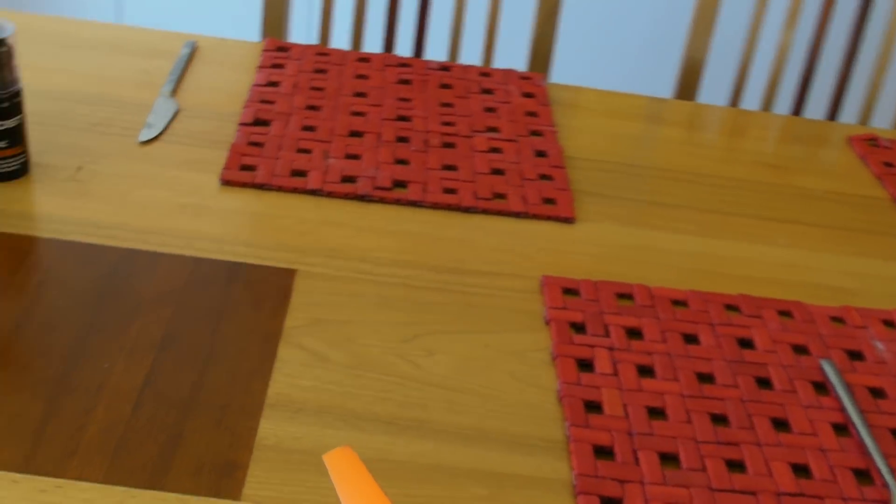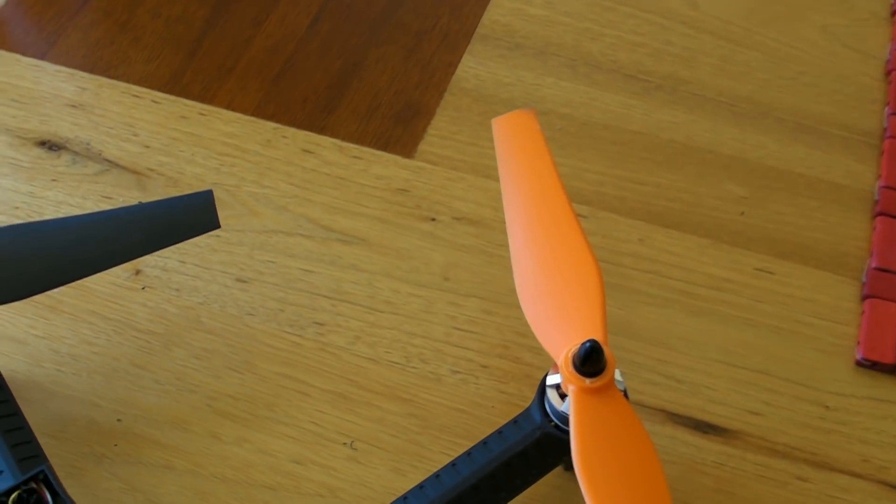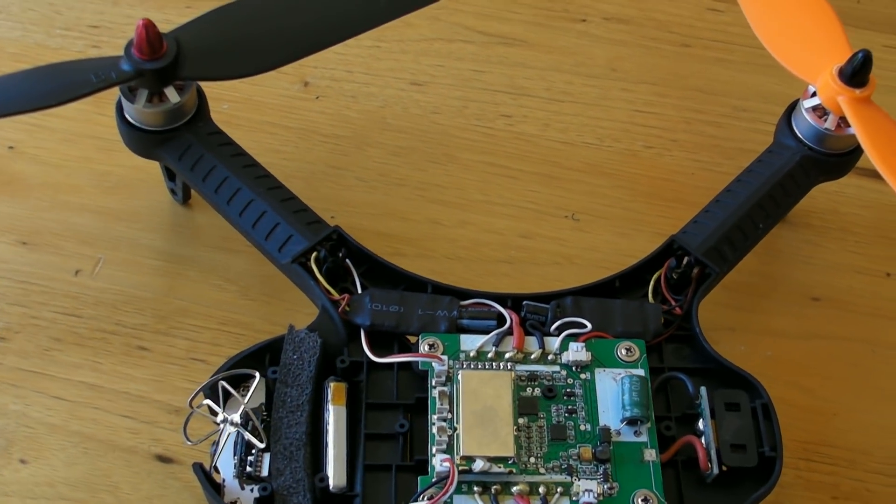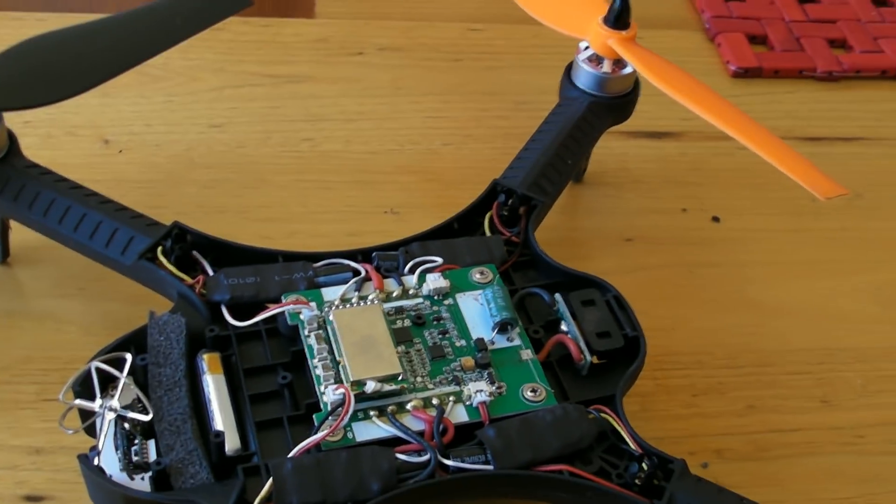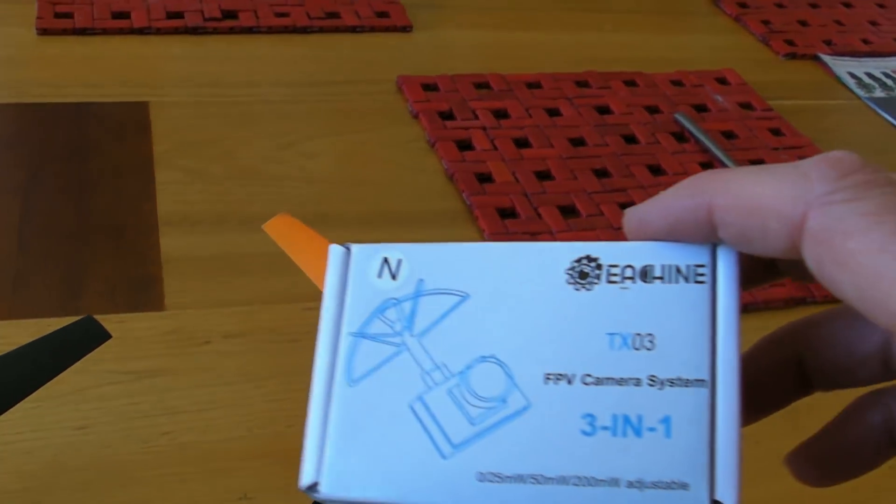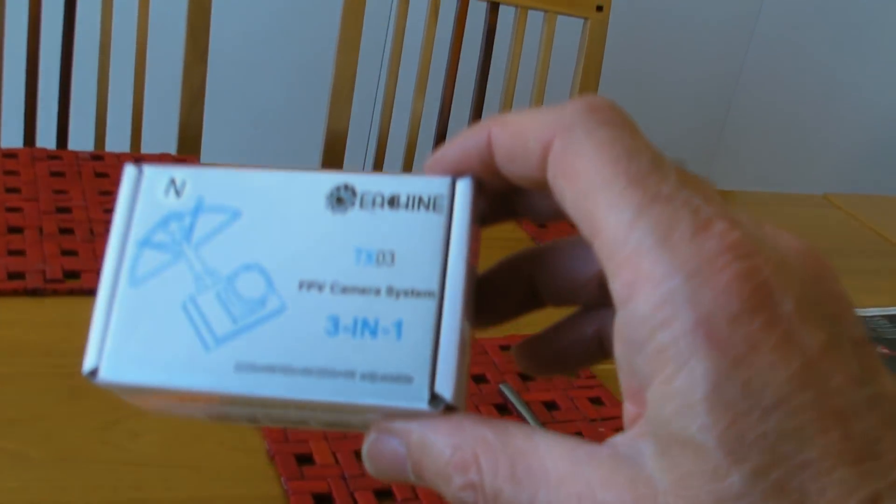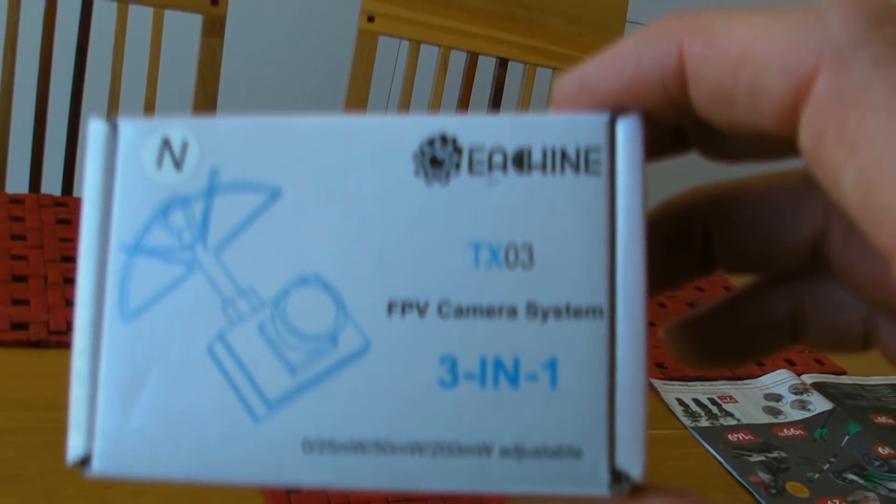Looking down on the whole thing, I'll go through how I put this together step by step. Sitting in the nose with its cloverleaf antenna is an eShin TXO3 3-in-1 camera.